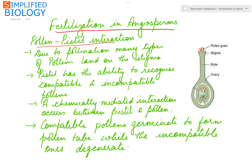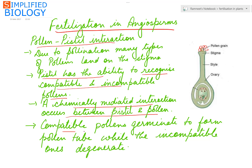Due to pollination, different kinds of pollens come to land on the stigma. The pistil has the capability to recognize the right and wrong type of pollens, i.e. the compatible and incompatible pollens. A chemically mediated interaction occurs between the pistil and pollen. By the help of chemical compounds present in the pollen and the stigma, they are able to recognize each other. The compatible pollens germinate to form the pollen tube, while the incompatible ones degenerate.